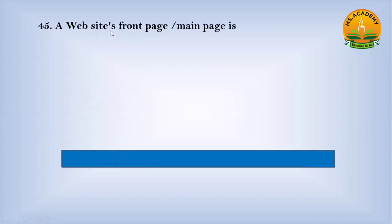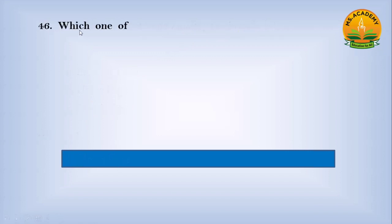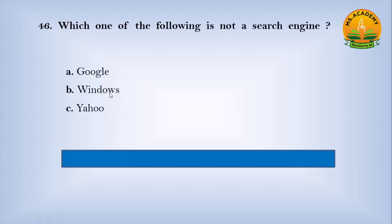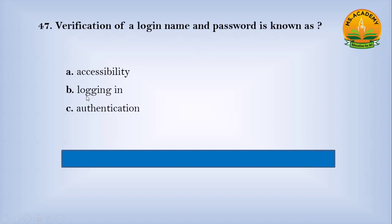A website's front or main page is called — option A: browser page, option B: home page, option C: search page. Answer: B — home page. Which one of the following is NOT a search engine? Option A: Google, option B: Windows, option C: Yahoo. Answer: B — Windows. Verification of a login name and password is known as — option A: accessibility, option B: logging in, option C: authentication. Answer: C — authentication.